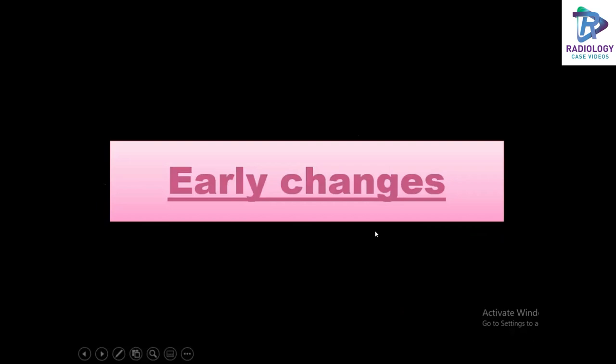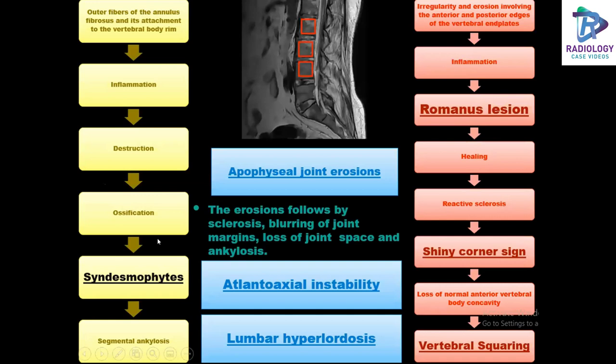What are the early radiological changes that we see in AS? One is syndesmophytes — the annulus fibrosus and ligamentous ossification resulting in segmental ankylosis. An apophysis is a normal secondary ossification center located in the non-weight-bearing part of the bone. In AS we see apophysial joint erosions, findings of atlantoaxial instability, lumbar hyperlordosis, and the Romanus lesions, shiny corner sign, and vertebral squaring.